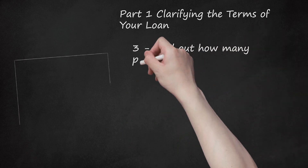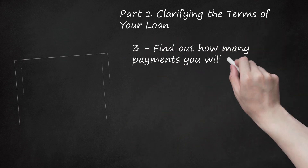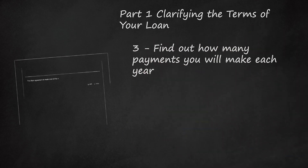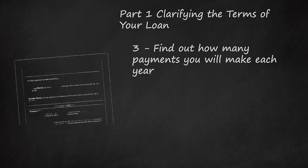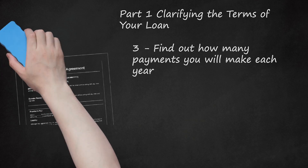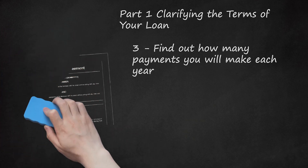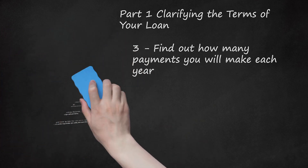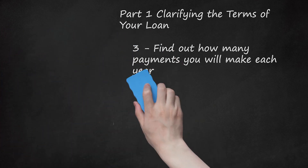Step 3: Find out how many payments you will make each year. The majority of car loan payments are made on a monthly basis. When calculating your monthly payments, you will need to know both how many payments you will make each year and how many payments you will make in total. This information can be easily found in the terms of your car loan.